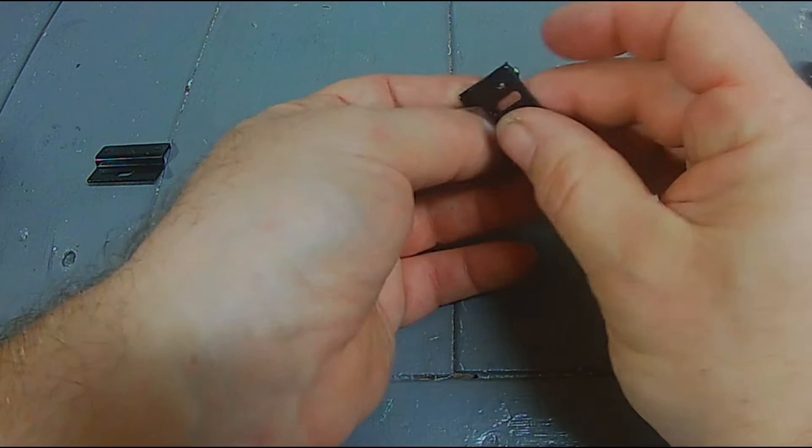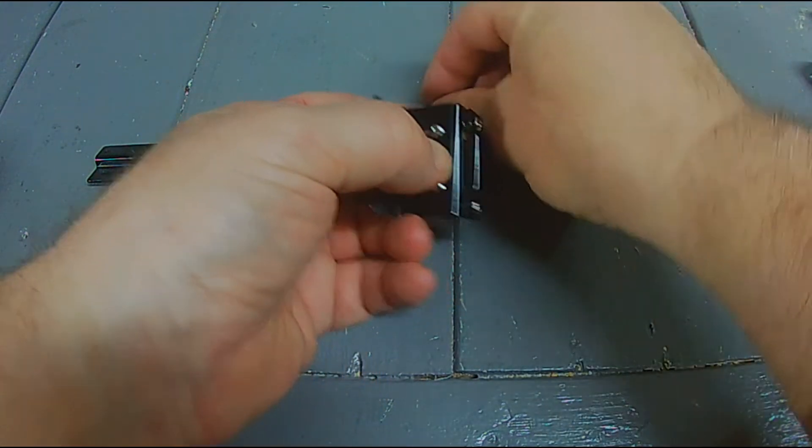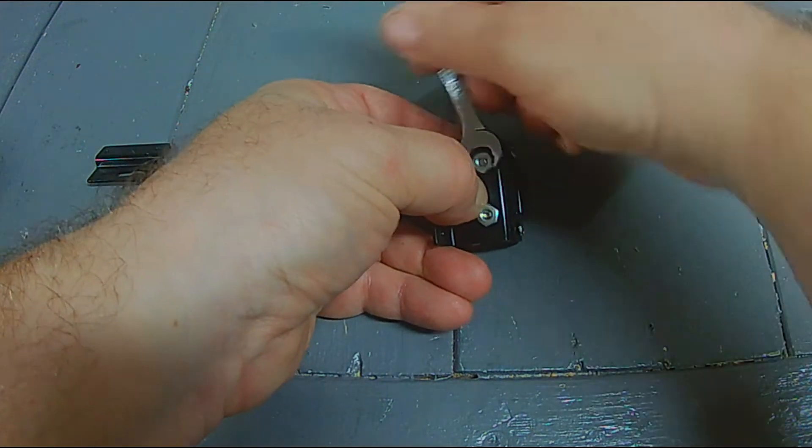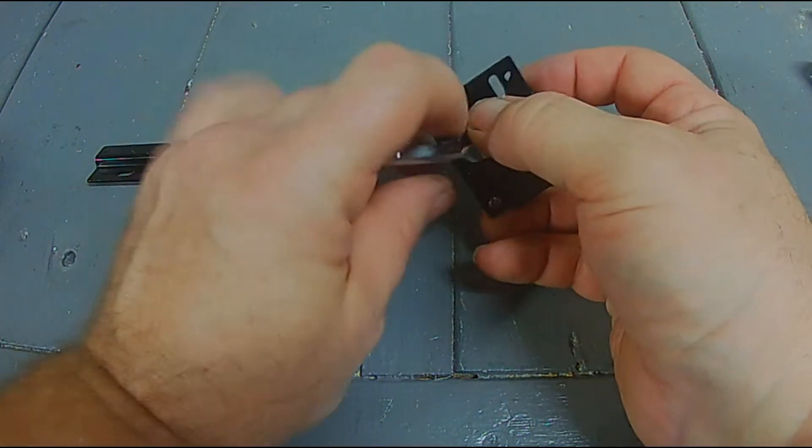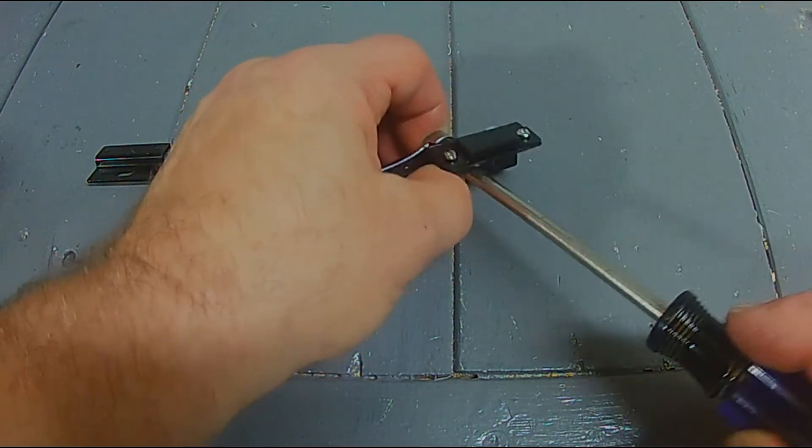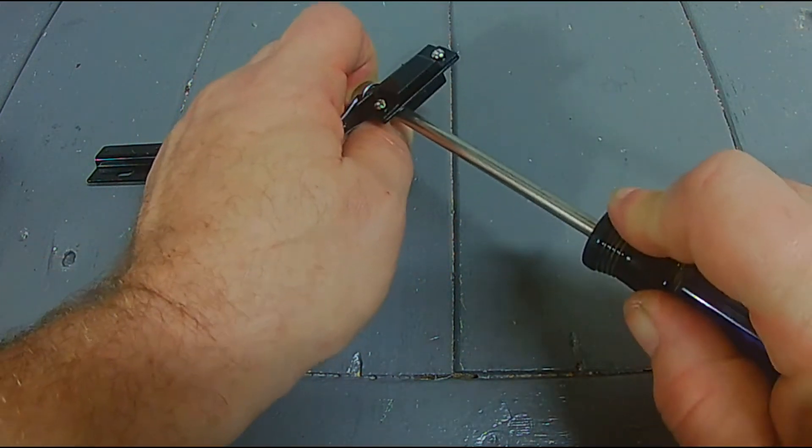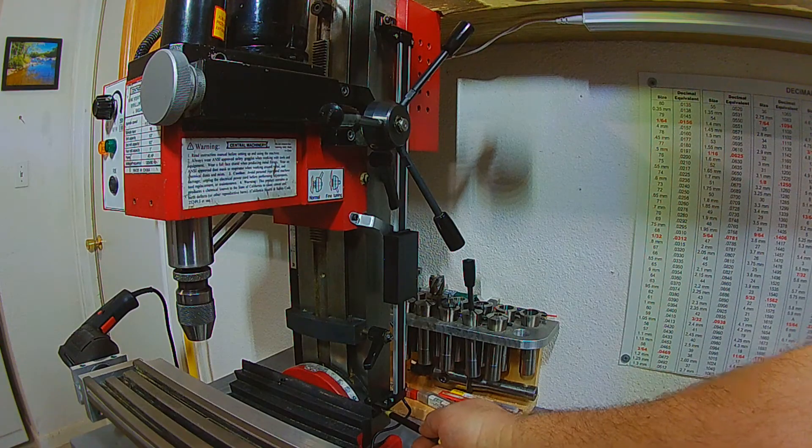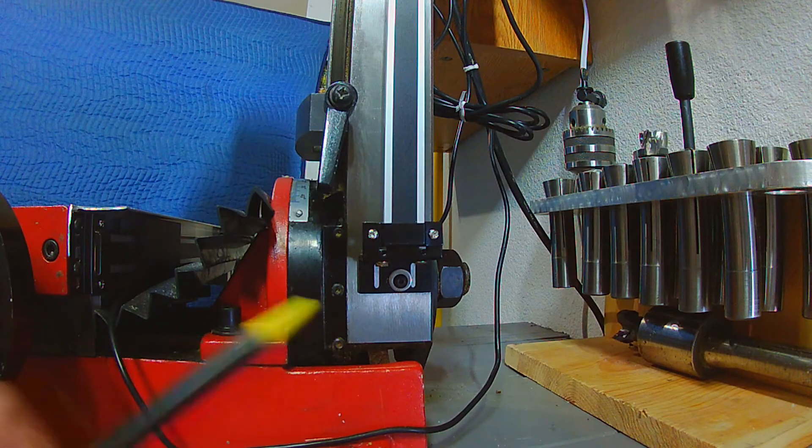I used some 6-32 locking screws and nuts that I had in the spare nuts and bolts box. Don't forget to square them up and tighten them down. There is a set of these brackets at the bottom and top of the scale.